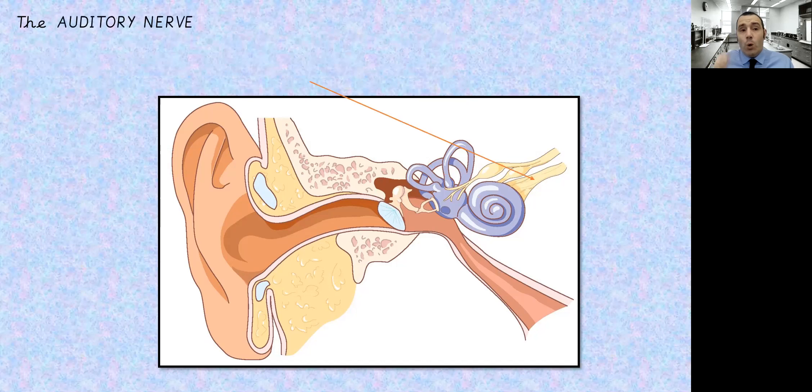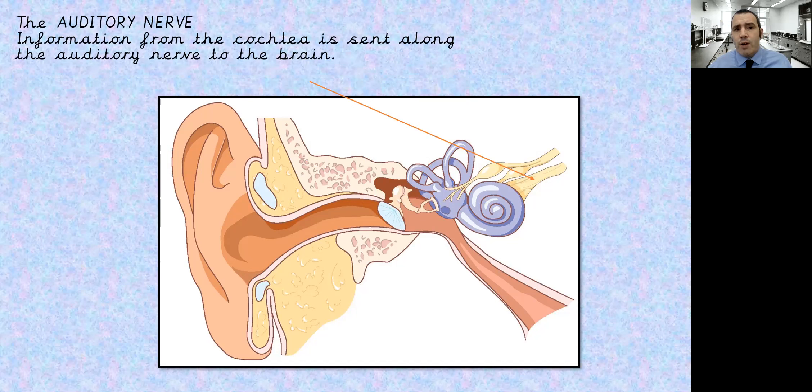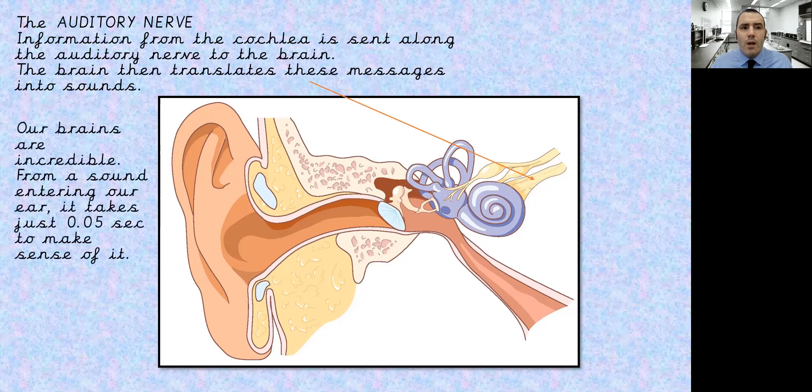So moving on, we have the auditory nerve. So the information from the cochlea is sent along the auditory nerve to the brain. The brain then translates these messages into sounds. So what's happening here as the wave comes in, it gets converted into an electrical signal which then can travel along the nerves. The brain then translates these messages into sounds. Our brains are incredible. From a sound entering our ear, it takes just 0.05 of a second to make sense of it.